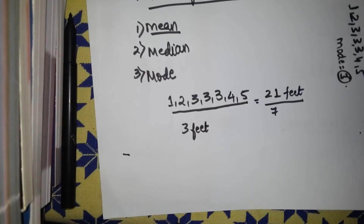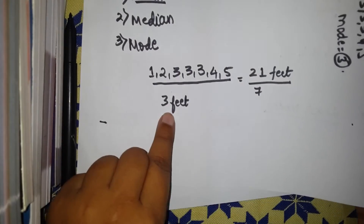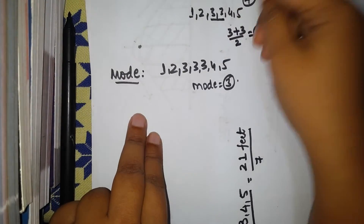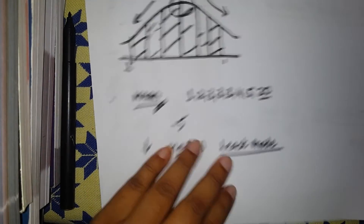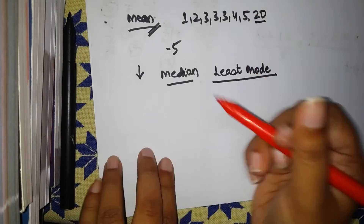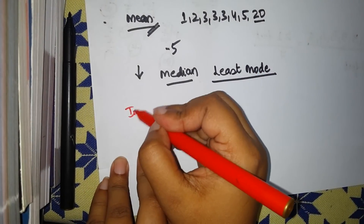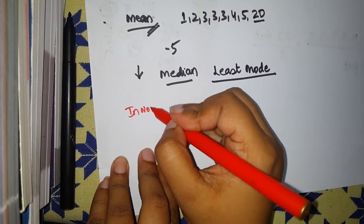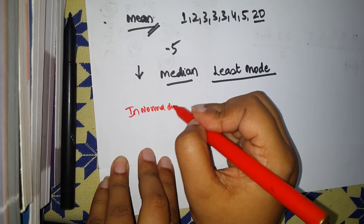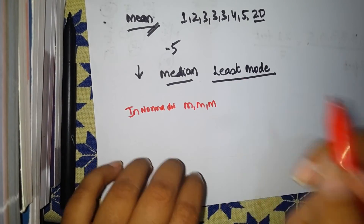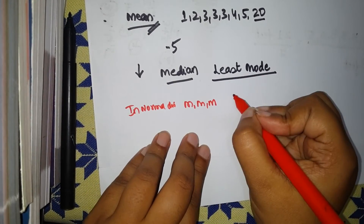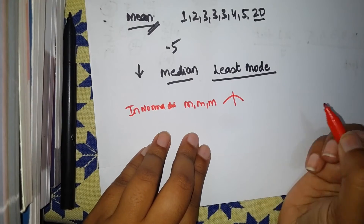In the previous example, we got mean as three feet, median as three feet, and mode also as three. So in a normal distribution, mean, median, and mode are equal — they coincide at the center point.